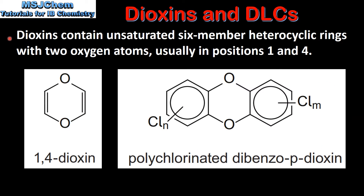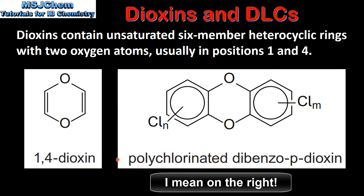We will start by looking at dioxins. Dioxins contain unsaturated 6 member heterocyclic rings with 2 oxygen atoms, usually in positions 1 and 4. On the left we have the structure of 1,4-dioxin. As you can see it has 2 oxygen atoms at positions 1 and 4. On the right we have the general formula for a polychlorinated dibenzodioxin.